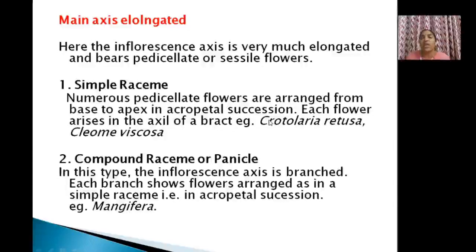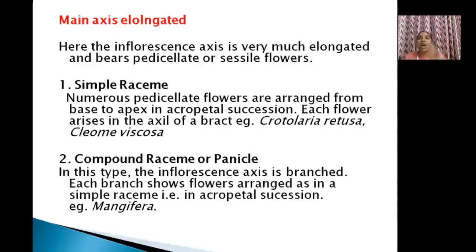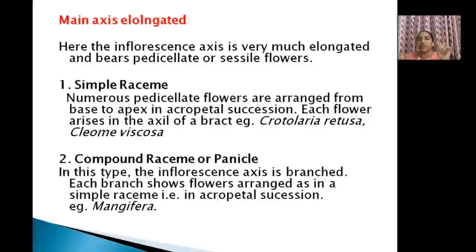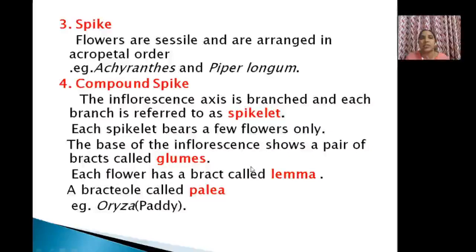In simple raceme, flowers are in acropetal succession — all flowers are pedicelate, basal flowers are older, upper flowers are younger. The second type is compound raceme or panicle, where the inflorescence axis is branched but flowers are still arranged in acropetal succession — a number of simple racemes on branches. Example is Mangifera — the mango.